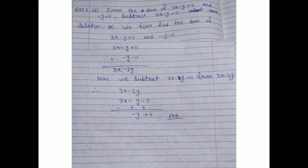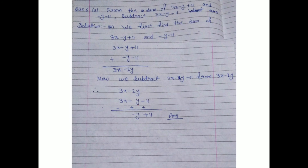Since we are doing subtraction, we change the signs of the lower equation. Where there is no sign written, it means plus. So plus 3x becomes minus 3x, minus y becomes plus y, and minus 11 becomes plus 11.